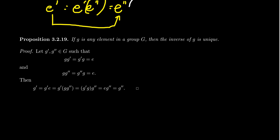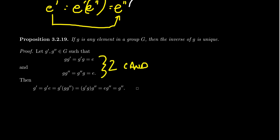Let's get back to the idea of inverses. If G is any element in the group, then the inverse of G is unique. To prove this, we're going to take two candidates for an inverse. So we're going to say G prime and G double prime are both inverses for G. What does it mean to be an inverse? For G prime, it means that G times G prime and G prime times G is equal to the identity E. And for G double prime to be an inverse, it means G times G double prime and G double prime times G is equal to E. So by assumption we have two candidates for the inverse of G.